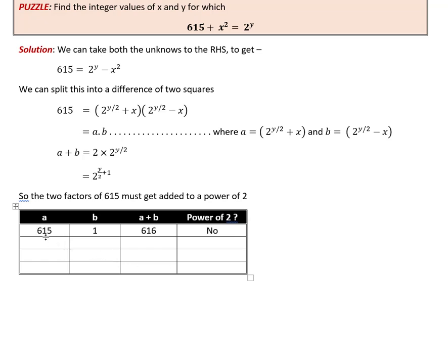Here is the first pair of factors: 615 and 1, but they add up to 616 which is not a power of 2. Let's take the next one. This doesn't add up to a power of 2 either. And there we go! Here we have 123 into 5 which adds up to 128 which is 2 raised to 7. So it is indeed a power of 2. But for completeness let's go ahead and keep factoring, and here is our last factor, it is not adding up to a power of 2.